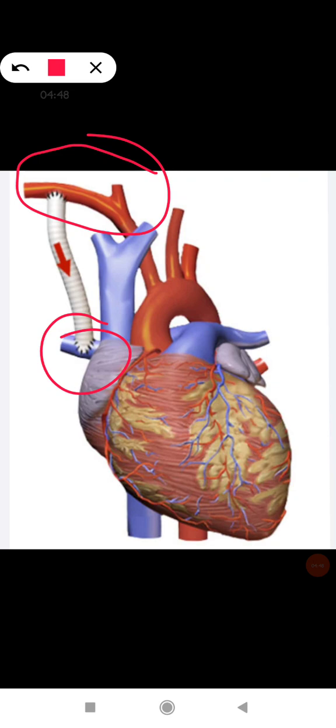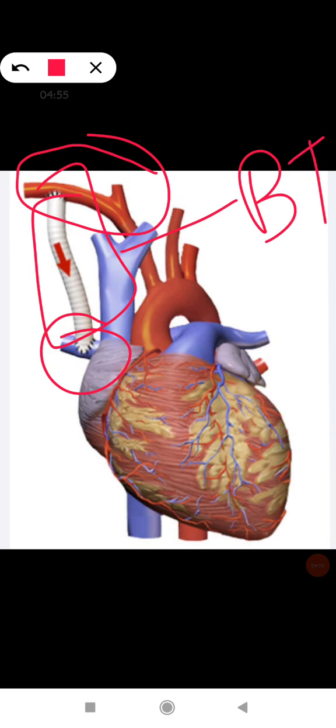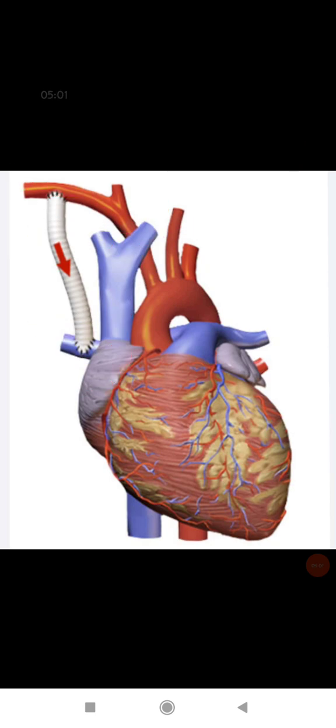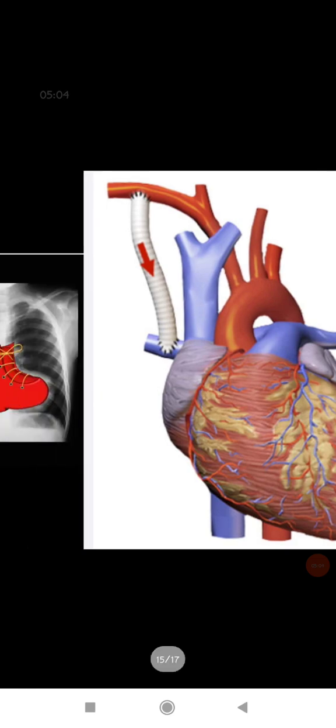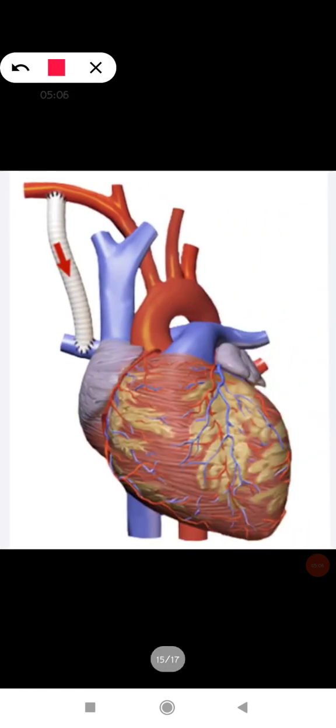And this is what we say BT shunt, Blalock-Taussig shunt. So it is connecting these two so that hypoxic condition can be prevented, so that blood from this subclavian artery can be transferred to pulmonary artery for reoxygenation. The second one is ventricular septal defect patch.